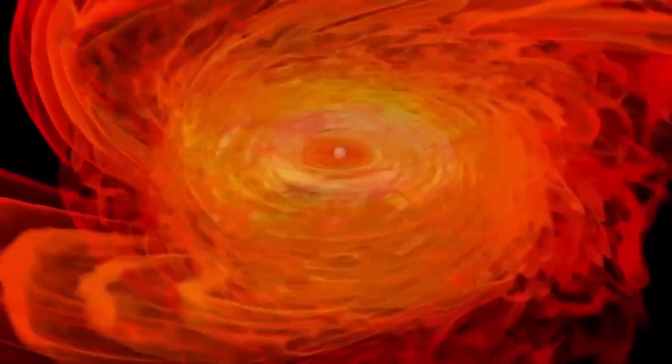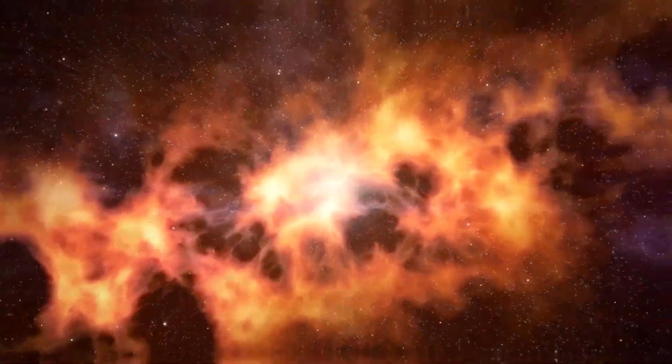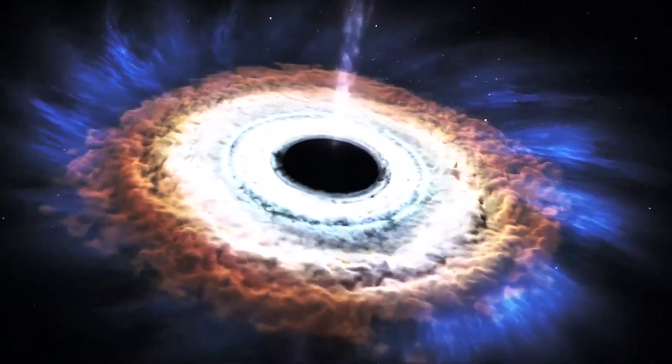If the original progenitor star that led to supernova was particularly large, this neutron star will become so heavy that it will form a black hole and nothing can escape it, not even light.